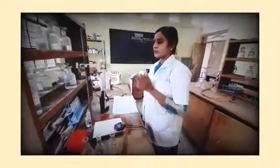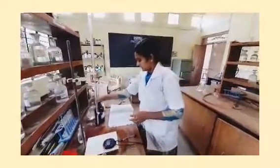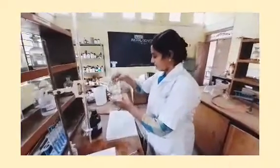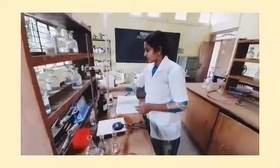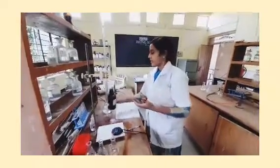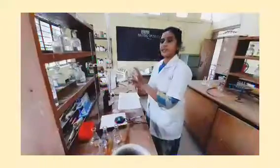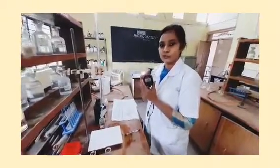Before going to start the experiment, I would like to explain how many chemicals were used. First of all, we use 0.5 normal NaOH — as I just corrected, here we use 0.1 normal NaOH — then 0.5 normal hydrochloric acid, then methyl acetate, because we want to find out the rate constant of methyl acetate. For the titration, we use phenolphthalein indicator, and since this titration is time-based, we use a stopwatch.